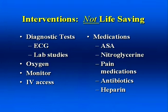There are many interventions that may be performed routinely in the emergency department that are not life-saving. These include diagnostic tests such as an ECG, lab studies, administration of supplemental oxygen, placing the patient on a cardiac monitor, obtaining IV access, and the administration of medications that are important but not immediately life-saving — these may include aspirin, nitroglycerin, pain medications, antibiotics, and heparin. These interventions do not meet Level 1 criteria. It is important to clearly understand the need for immediate life-saving interventions. If you do not, you will end up over-categorizing ESI Level 2 patients and the meaning of ESI Level 1 will be lost.